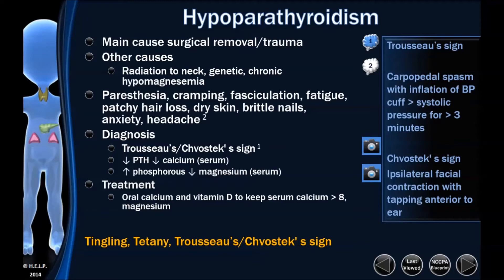How is this going to affect our body? The main symptoms are paresthesia, cramping, fasciculation, and fatigue. These are difficult because they're not very specific. Patchy hair loss, dry skin, and brittle nails can also happen in hypothyroidism, so these are not specific and probably won't help us determine anything on a question. However, cramping, fasciculation, and paresthesia are more specific to the hypocalcemic state.